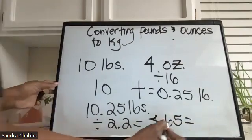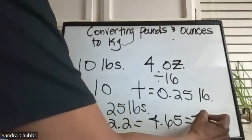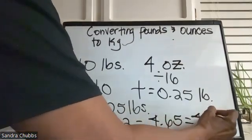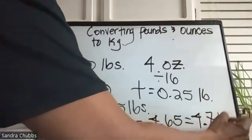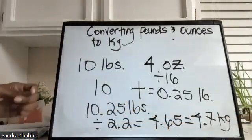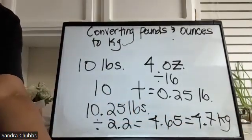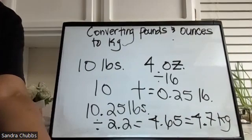We round to the nearest tenth, always. And that gives us 4.7. That is the answer for that one.